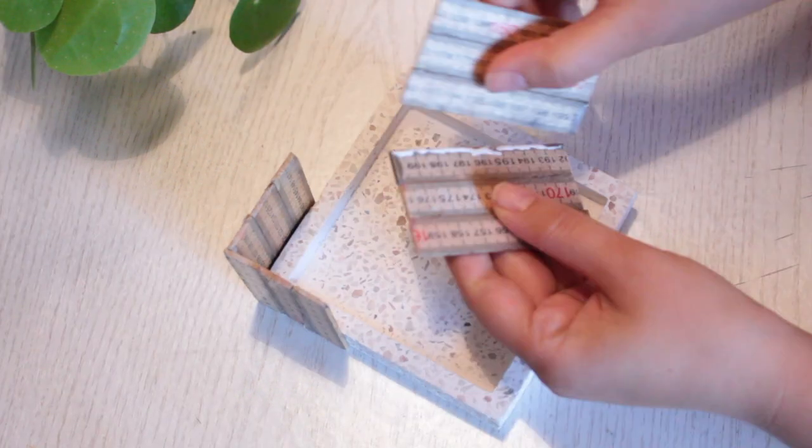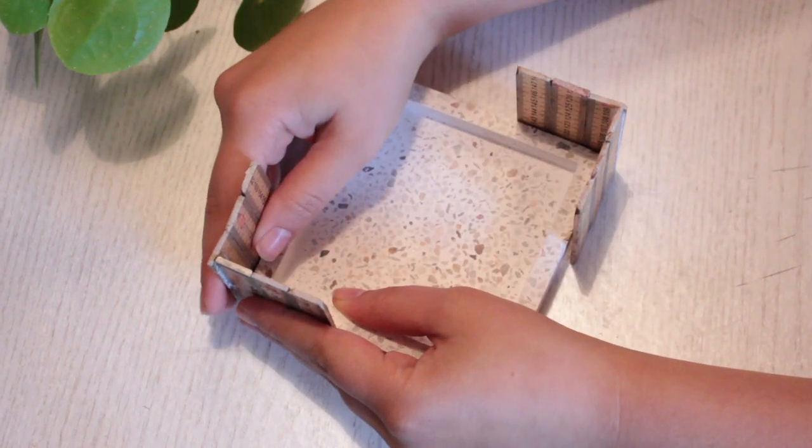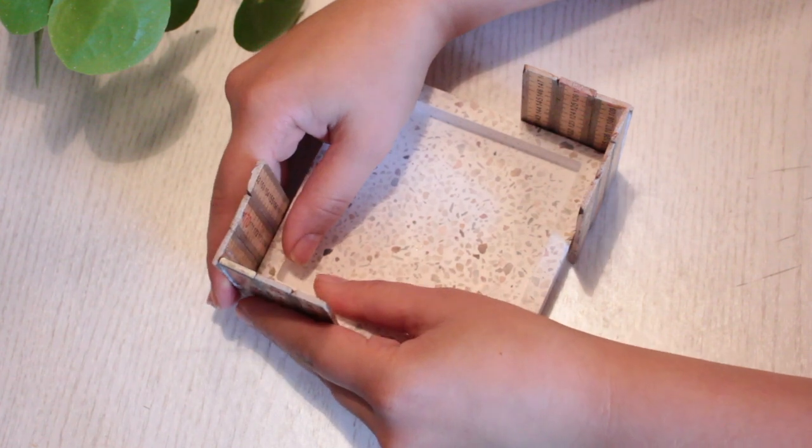Put some glue on the edge of the other sides and glue them together as well. Use the plate to keep everything straight and leave them to dry completely.